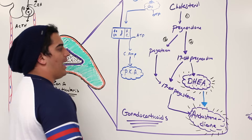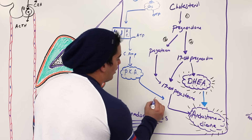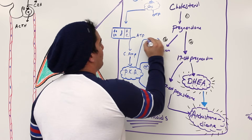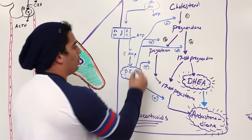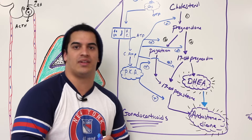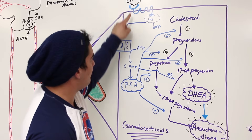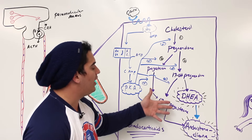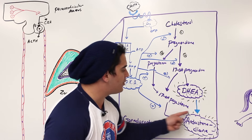Regarding protein kinase A — it's important because it can activate specific enzymes by phosphorylating them. It phosphorylates multiple different types of enzymes to allow these reactions to occur, helping stimulate a lot of these reactions. That's what adrenocorticotropic hormone is doing — stimulating protein kinases to stimulate specific enzymes involved in the cholesterol pathway. The overall end result is DHEA, dehydroxyepiandrosterone, and androstenedione.